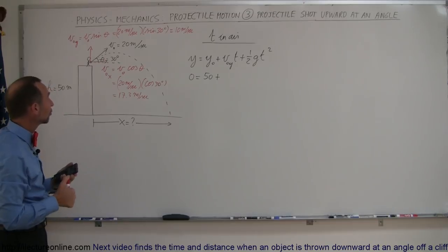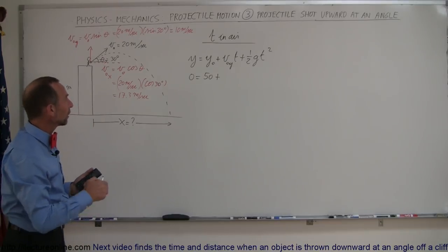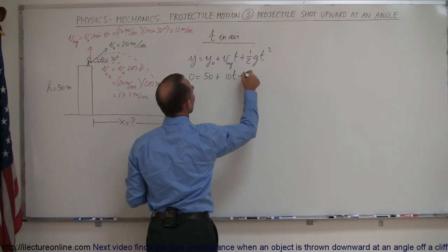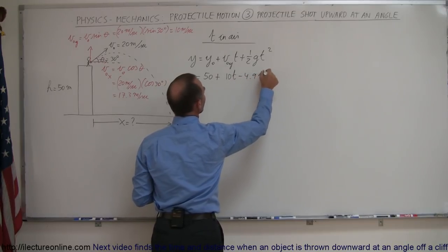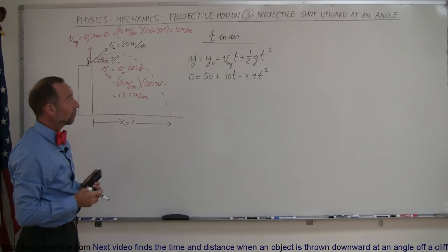So now we have the initial component in the x and the y direction of the velocity. So you always need to do that as well. Now we can plug that in here. So it's a positive 10 times t minus 4.9 t squared. So now we have a quadratic equation we need to solve for time.